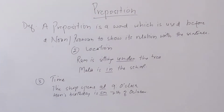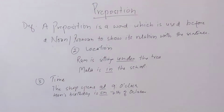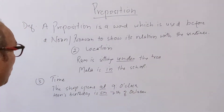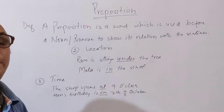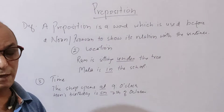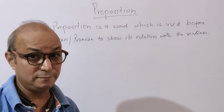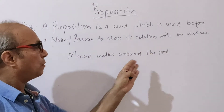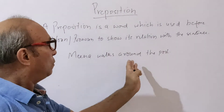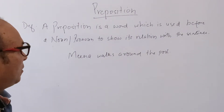When you are referring to weekdays, you will use 'on.' When you are on time, you will use 'on.' For example, the shop opens at 9 o'clock. Here 'at' is used for a specific time and 'on' is used for days.